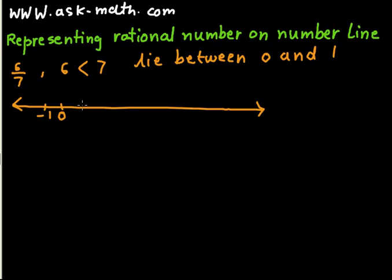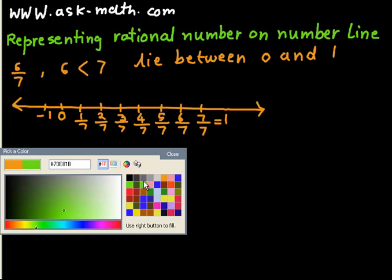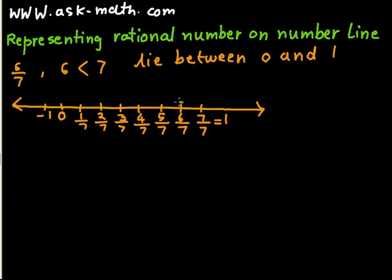So it will be 1 over 7, 2 over 7, 3 over 7, 4 over 7, 5 over 7, 6 over 7, and 7 over 7 which is equal to 1. So 6 over 7 is here.